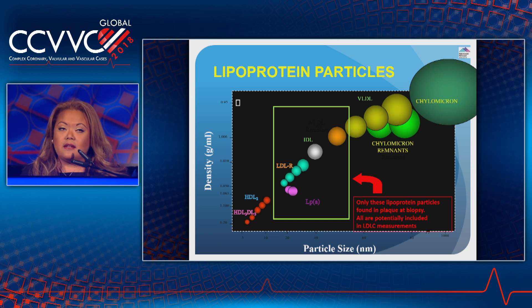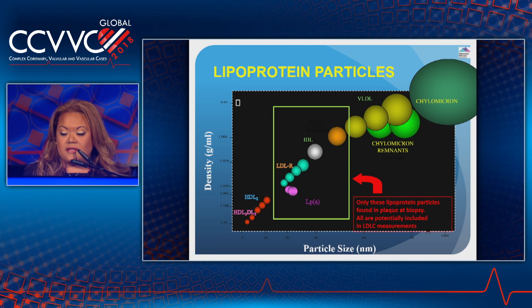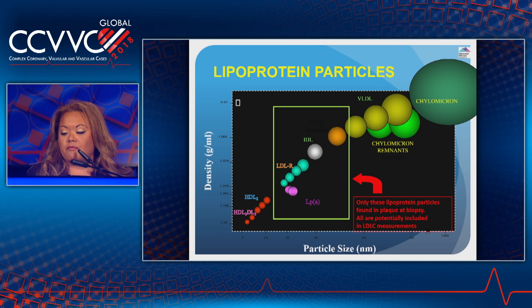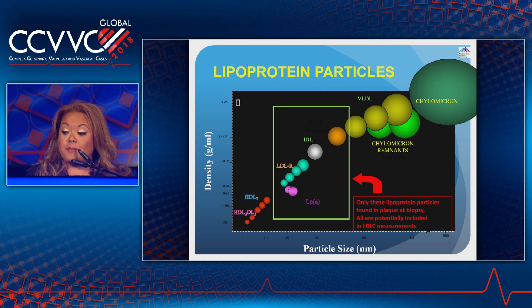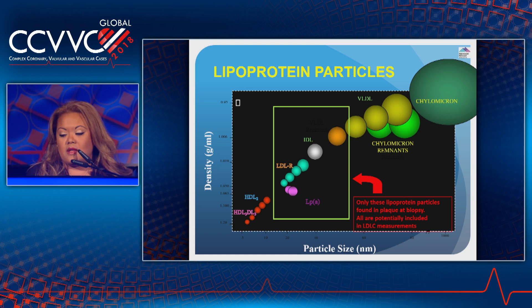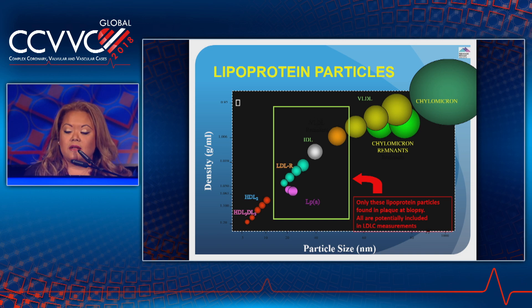Both LP(a) and IDL are more atherogenic than LDL itself. They don't respond to statins, and both are highly inherited and implicated in premature CAD. LP(a), or the widow maker, doubles risk, but when another lipid risk factor such as dense LDL is also present, the risk leaps to 25 times. LP(a) also arises in renal failure and is probably partly responsible for the terrible CAD in end-stage renal disease patients.